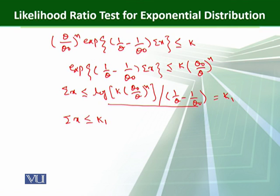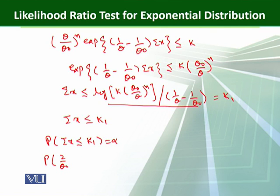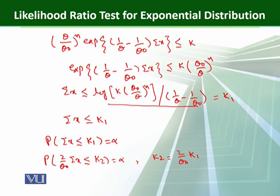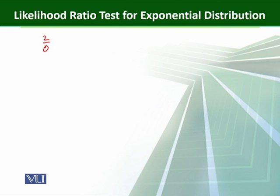To find k1, we apply the size condition: P(sum(x) ≤ k1) = alpha. If we multiply by 2/theta naught, we get P(2/theta naught * sum(x) ≤ k2) = alpha, where k2 = (2/theta naught) * k1. This is because, by a property of the exponential distribution under the null hypothesis, 2/theta naught * x follows a chi-square distribution with 2 degrees of freedom.